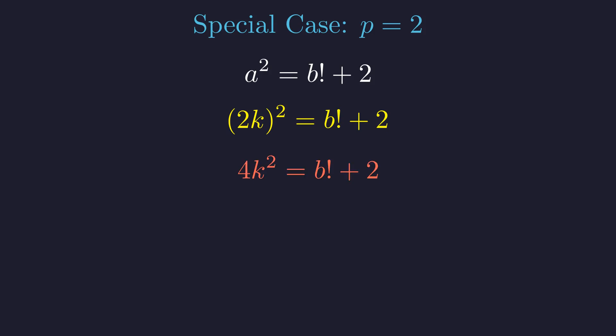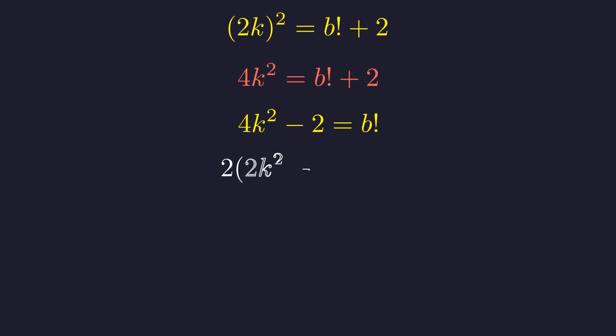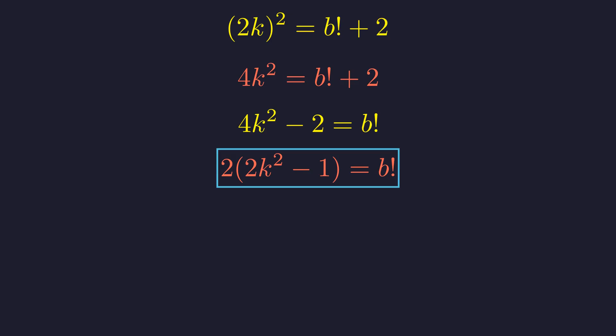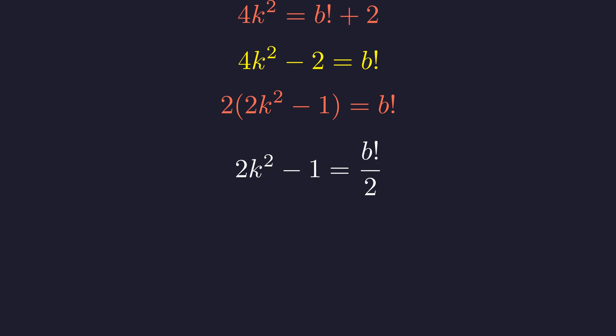We subtract 2 from both sides of the equation. We can see a common factor of 2 on the left-hand side — let's factor it out. This reveals a crucial structure: 2 multiplied by an odd number. The term 2K squared minus 1 is always an odd number. Dividing both sides by 2, we get a relation where the left side is odd.